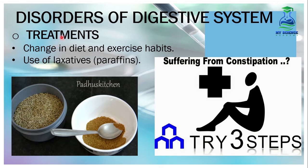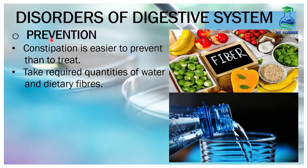Treatments of constipation: Number 1, change in diet and exercise habits — eat a diet sufficient in fiber, take proper water intake, and exercise. Number 2, use of laxatives or paraffins, which are suitable for the treatment of constipation. For prevention, constipation is easier to prevent than to treat. Take required quantities of water and dietary fiber to avoid constipation.